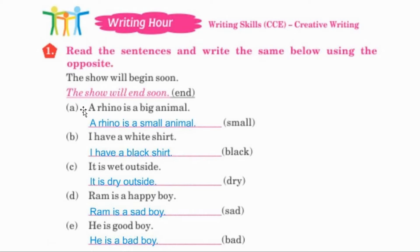A. A rhino is a big animal. Opposite of big is small. All of you write: a rhino is a small animal.